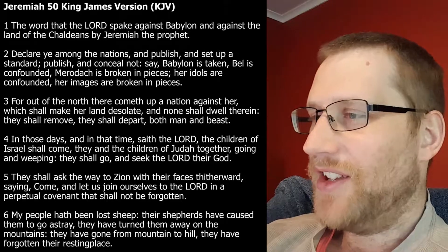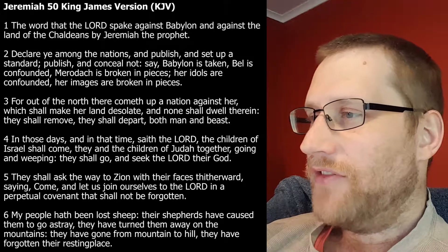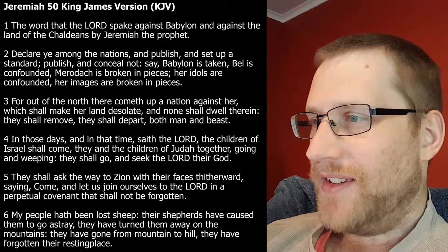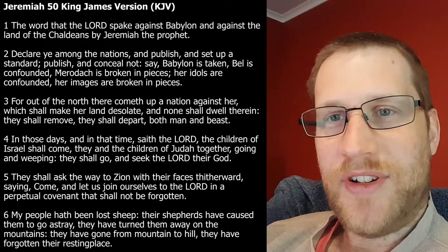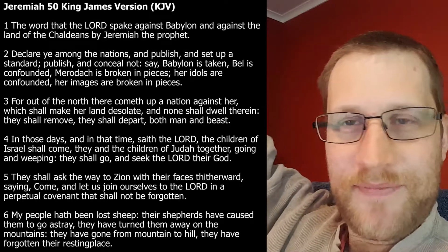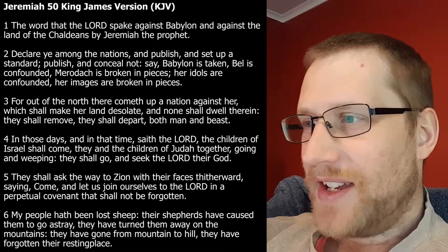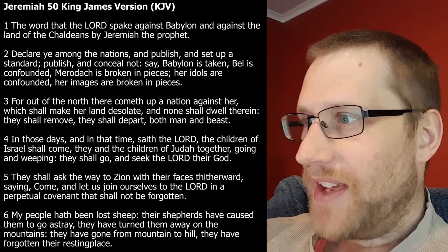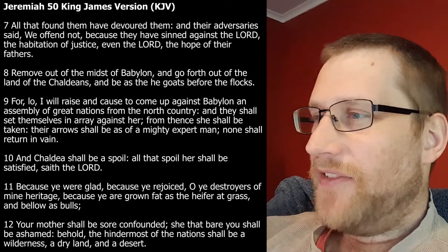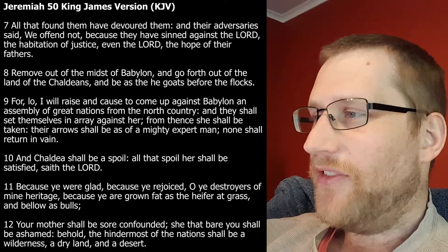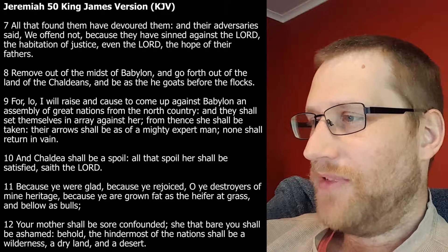'My people have been lost sheep. Their shepherds have caused them to go astray. They have turned them away on the mountains. They have gone from mountain to hill. They have forgotten their resting place.' Some of them have been talked about in previous videos — the high places, the axis mundi, the places that people go up to, where people tend to put the temples on hills. He's talking about the people going from mountain to hill, implying they've gone from god to god. They've forgotten their resting place, which is Mount Zion, and the true God.